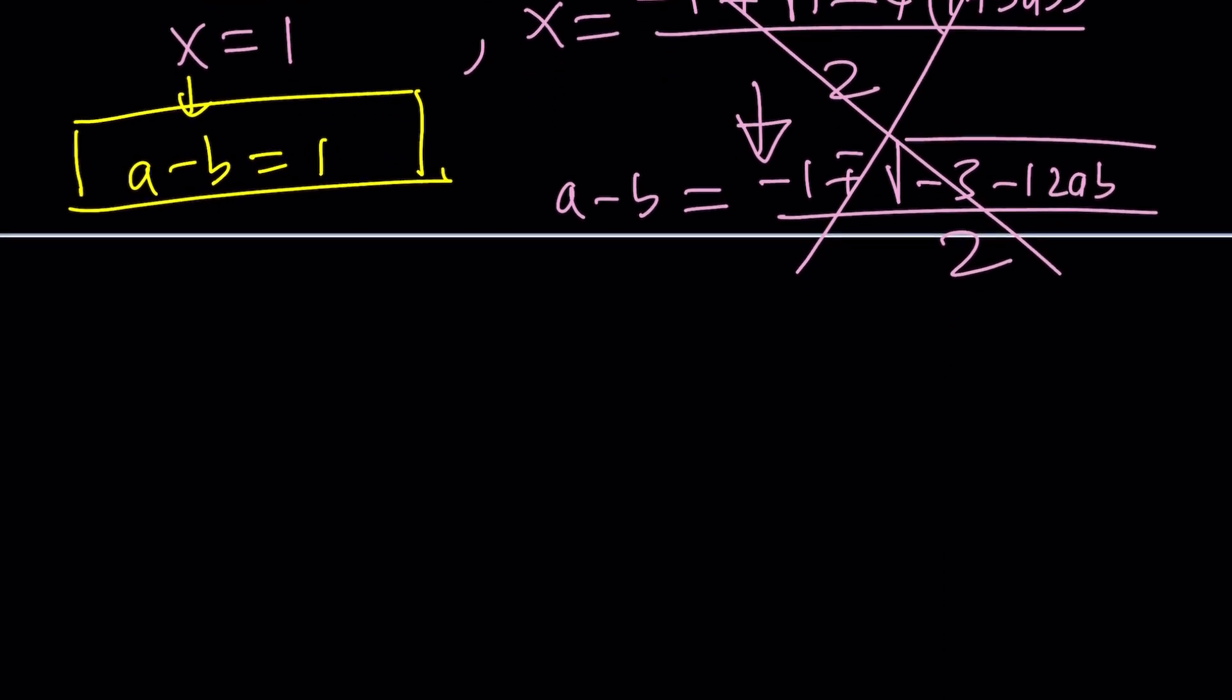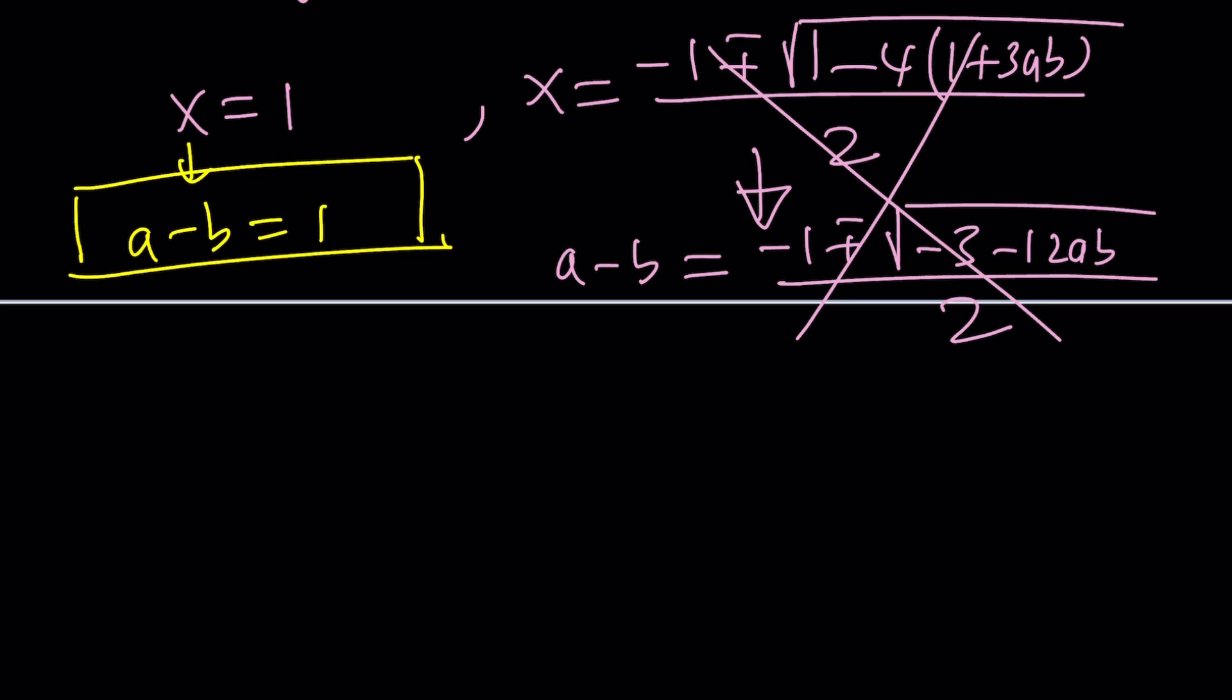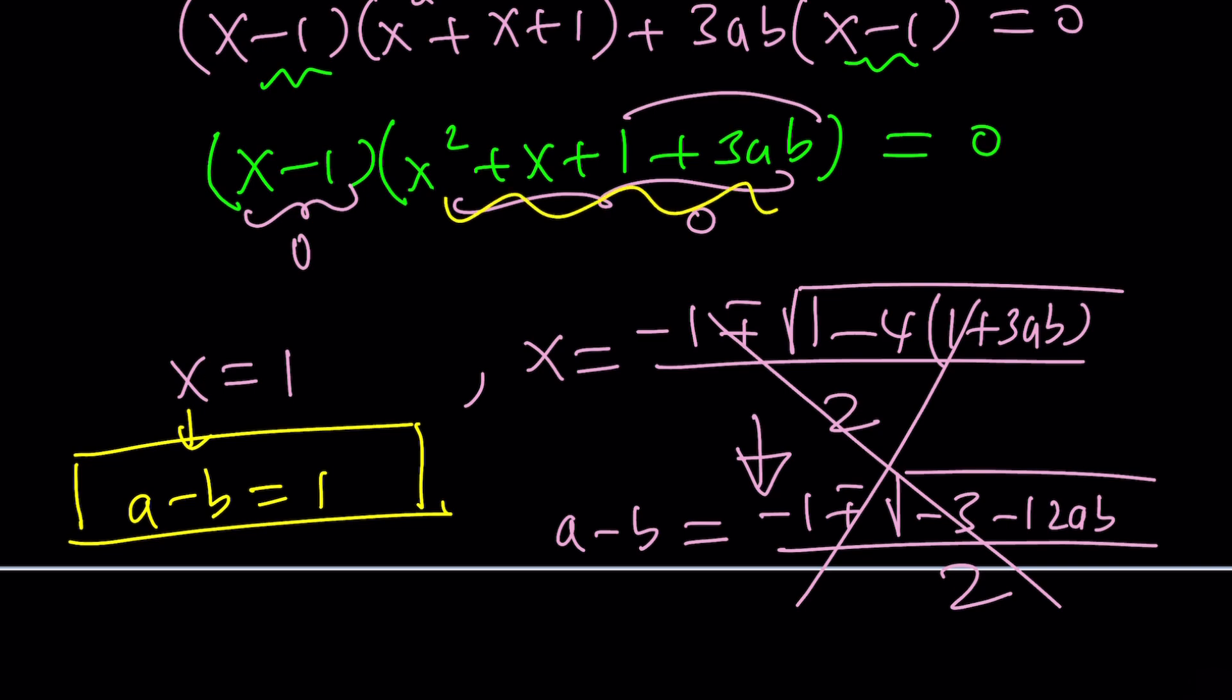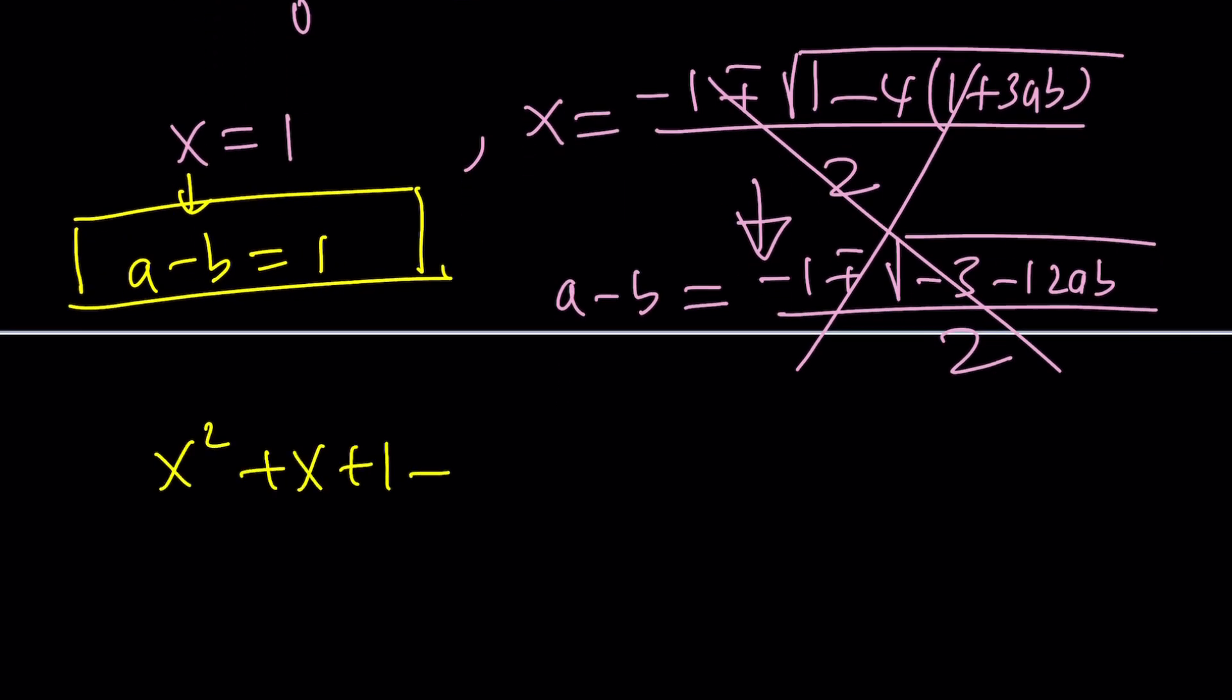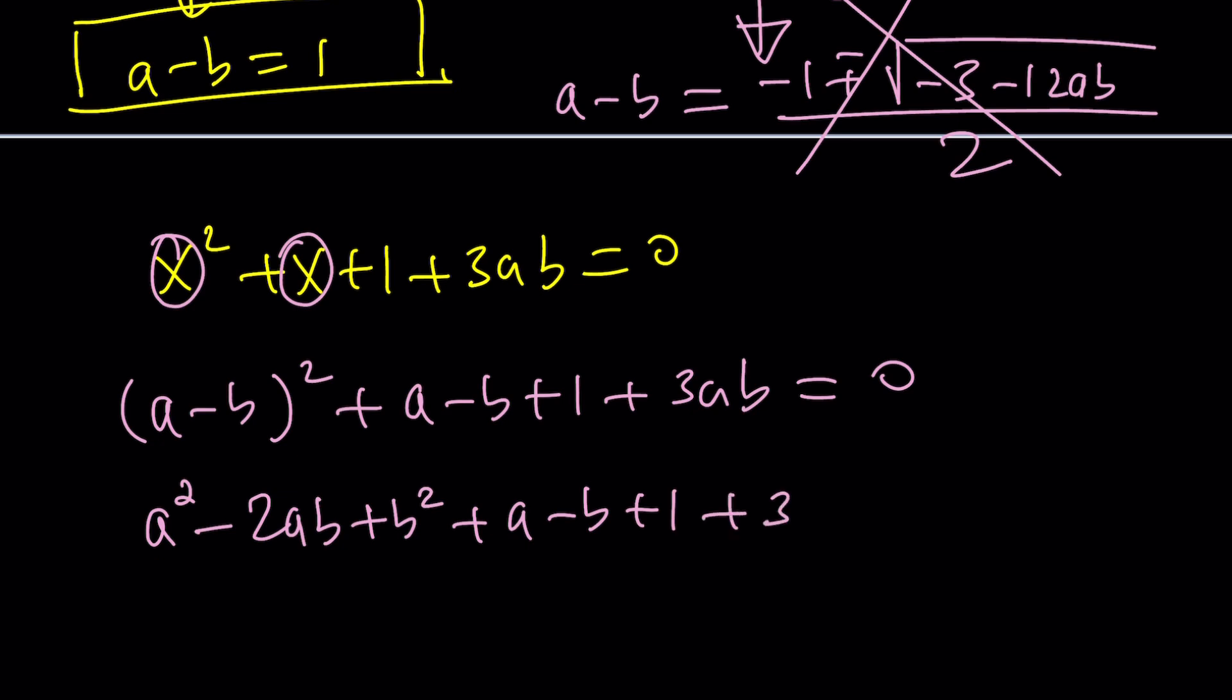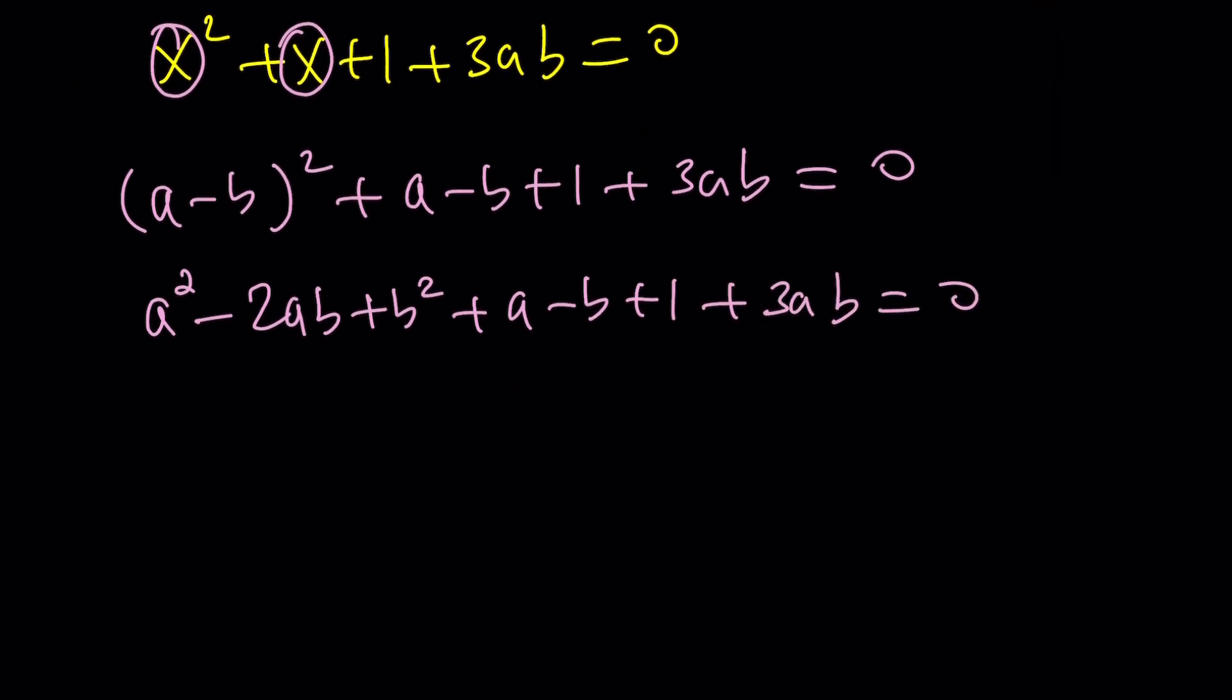What about another way to approach the problem? I got to tell you something. You could actually take it from here. We have x² + x + 1 + 3ab = 0. I'm going to do a little bit of hocus pocus. Remember that x is a - b, so I can write it as (a - b)² + (a - b) + 1 + 3ab = 0. This is actually the equation I was trying to get from the cubic by way of substitution. Now we can expand everything.